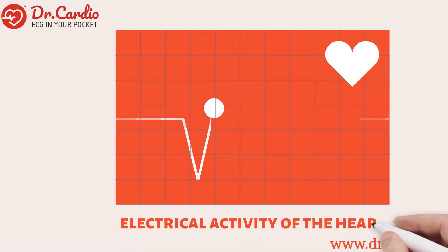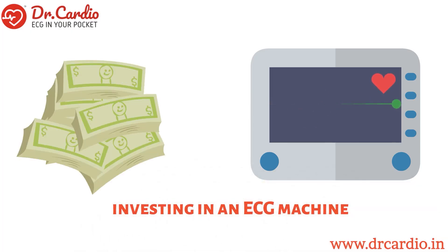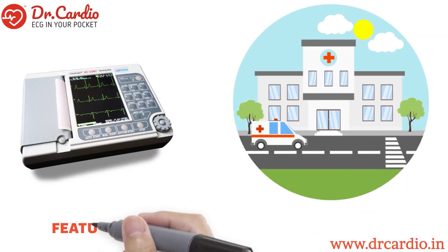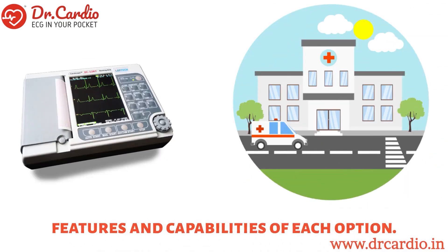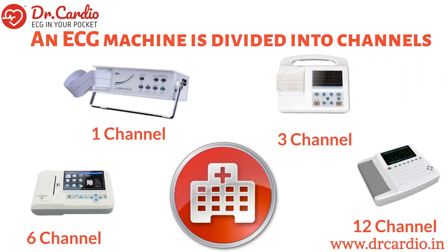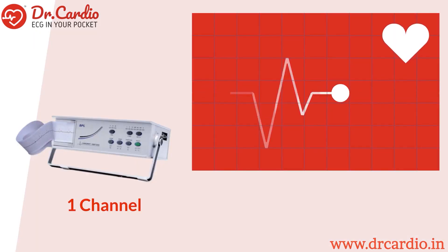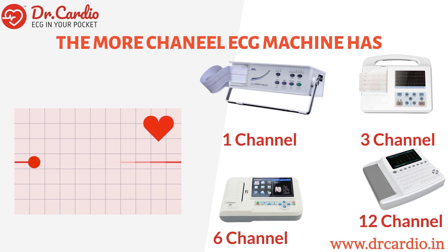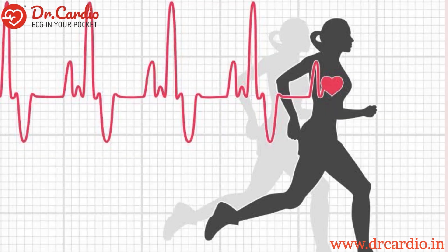ECG machines are essential tools used to record the electrical activity of the heart. When investing in an ECG machine, it is important to understand the features and capabilities of each option. An ECG machine is divided into channels, and a channel is a single lead that records the electrical activity of the heart. The more channels an ECG machine has, the more detailed the electrical activity of the heart can be analyzed.